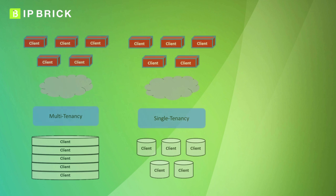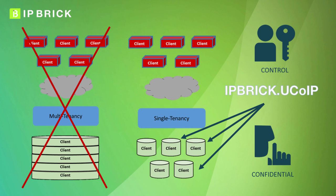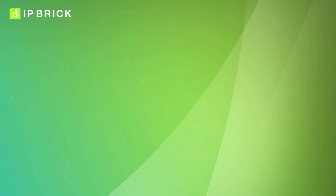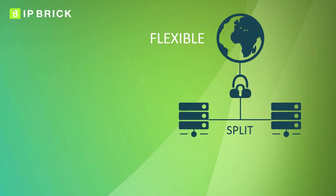IP Brick UKOIP uses single-tenant technology, which means that each company has its own independent system on the cloud. So every communication going through IP Brick UKOIP is kept confidential and under company control. It's also scalable and flexible according to company needs.